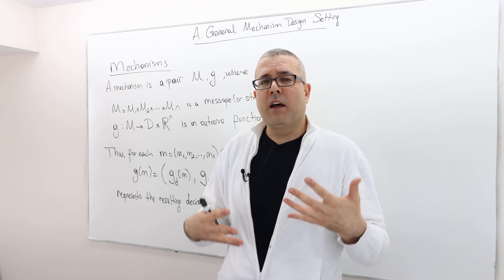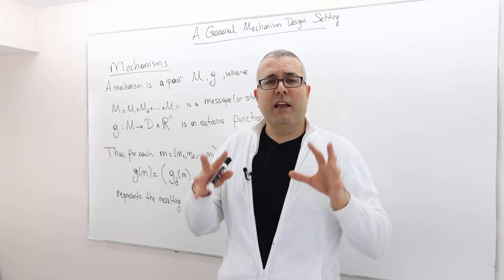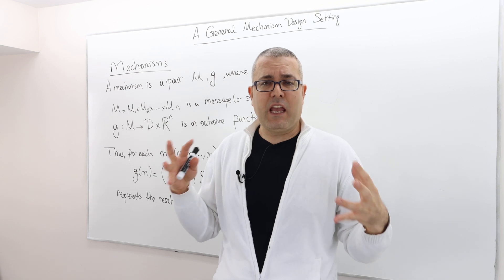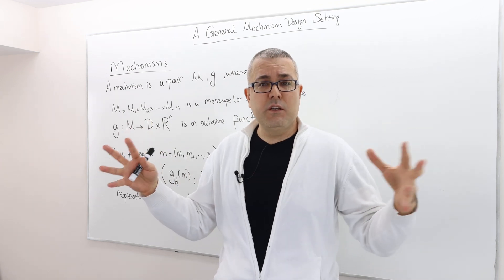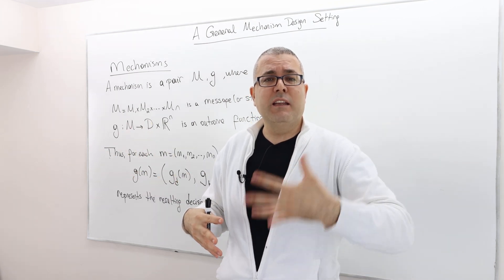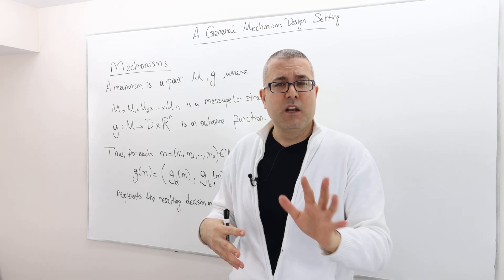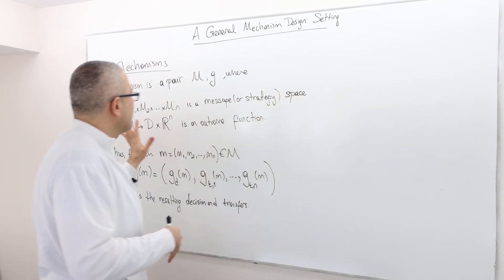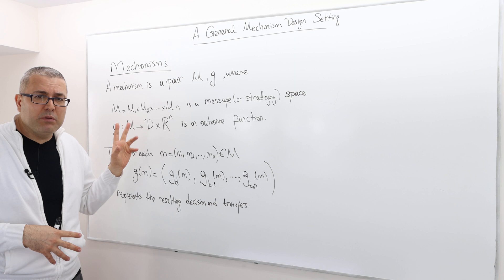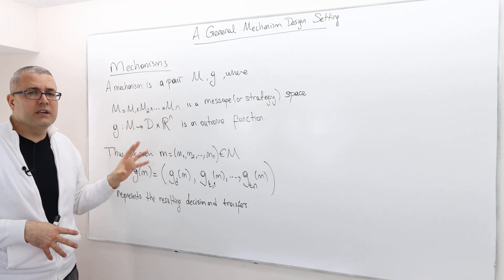So the mechanism can be a sort of a game form, can create a game form, which has nothing to do with the private information declaration. So therefore, you're going to see a resemblance of the social choice function here.